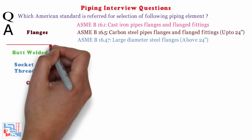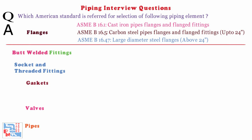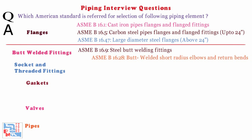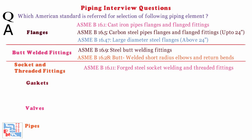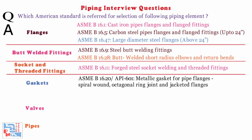For butt welded fittings: ASME B16.9 is used for steel butt welded fittings. ASME B16.28 is for butt welded short radius elbows and return bends. For socket and threaded fittings: ASME B16.11 is used for forged steel socket welded and threaded fittings. For gaskets: ASME B16.20 or API 601 is used for metallic gaskets for pipe flanges, including spiral wound, octagonal ring joint, and jacketed flanges.